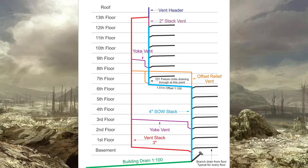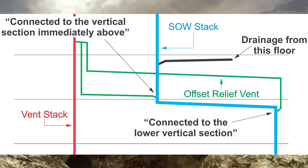The next piece we need to discuss is where we connect the offset relief vent to the upper portion of the offset. It is described as connected to the vertical section immediately above the offset, and it looks like this right here. Using this other picture to illustrate: I have my offset, the upper portion, and just above it I have my green pipe coming off, which is my offset relief vent. All I'm going to have there is a Y and a couple of 45s turning the offset to go nominally horizontal right after it.